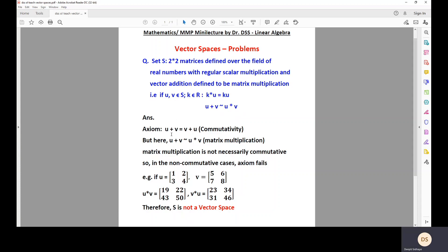So we know that there is an axiom of commutativity of addition. That means if U and V belong to the given set, U plus V has to be equal to V plus U. That shows that they are commutative.